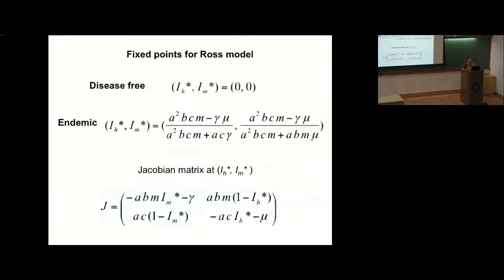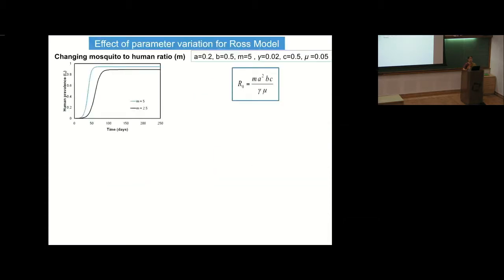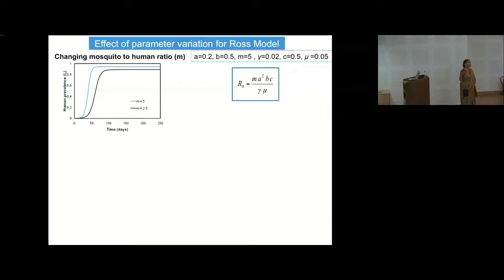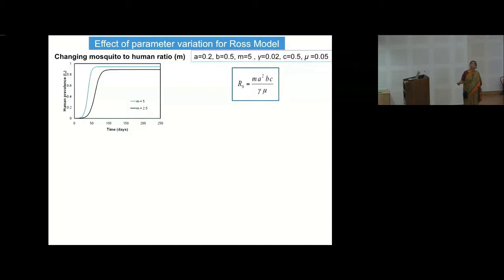What you would have to do in the afternoon: given the Ross model, find the steady states and their stability. It's a two-variable model. Also look at the effect of parameter variation. For example, change mosquito-to-human ratio M — more mosquitoes means faster disease onset and higher stabilization. When M is doubled, the reduction in final prevalence is about 5 to 6 percent. Next, change mosquito mortality rate mu — doubling it from 0.05 to 0.1 yields only about 2 percent reduction.